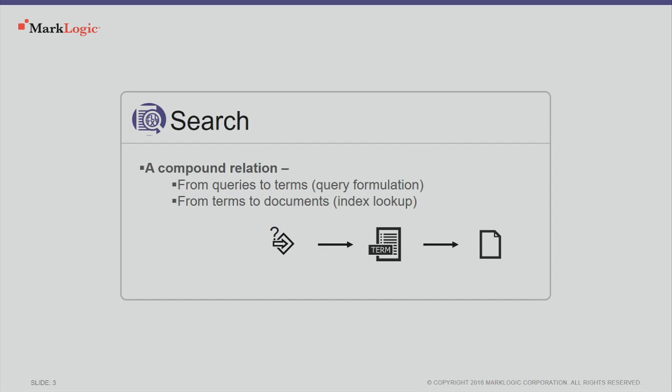So search, abstractly and mathematically, is a relation between queries and documents. You feed in queries, you get out documents. Double-clicking a little bit, in MarkLogic it's a compound relation: from queries to terms — this is query formulation, this is what XCMP plan will show you — and from terms to documents, which is index lookup or index resolution. And this term is a pretty generic concept in MarkLogic: words, sure, phrases, but also a diversity of facts about documents — the fact that a particular JSON property has a particular numeric value, the fact that a particular element has a particular child element, the fact that there are particular security constraints in it.